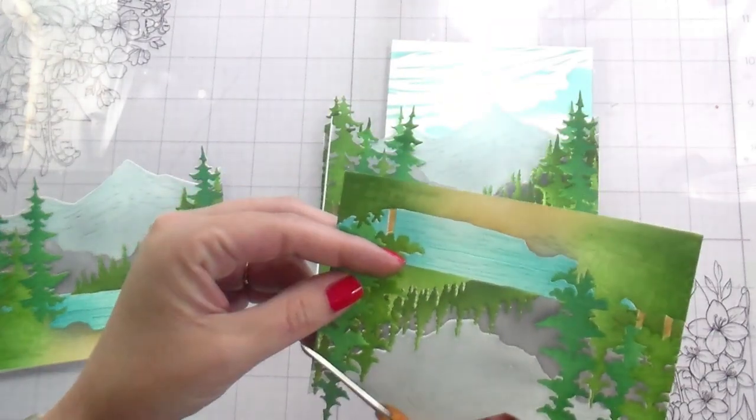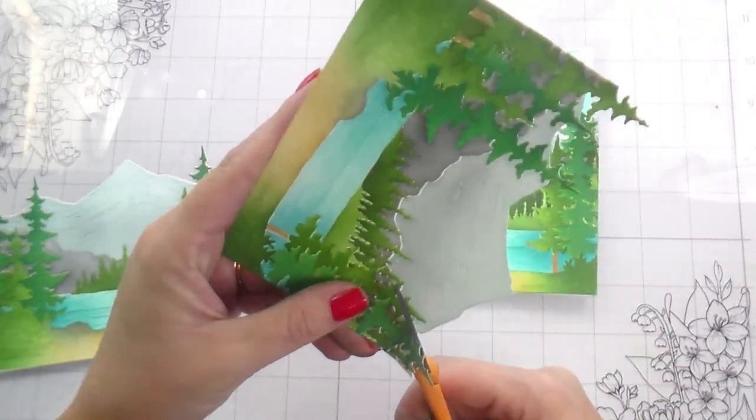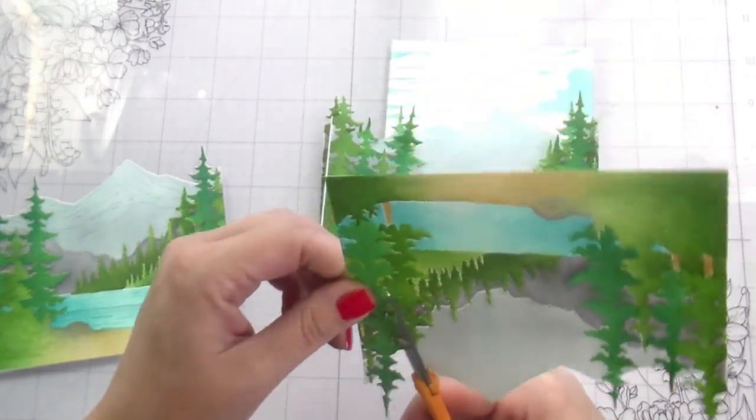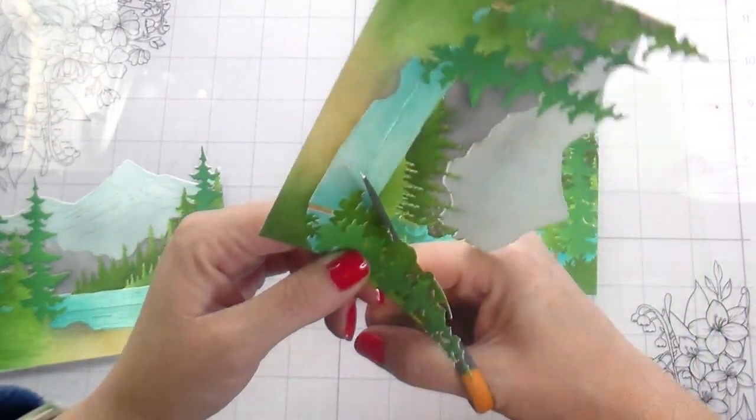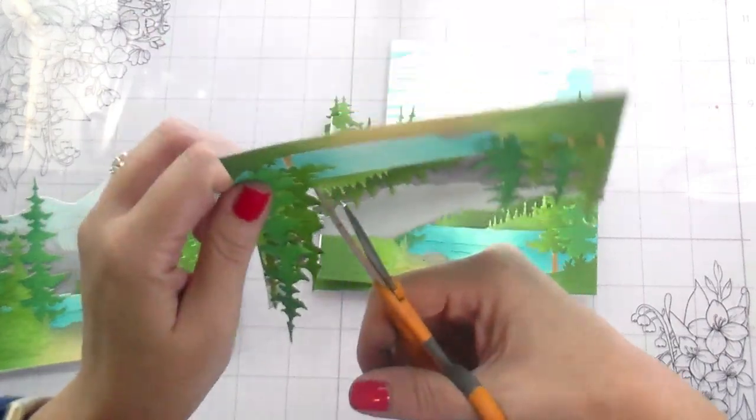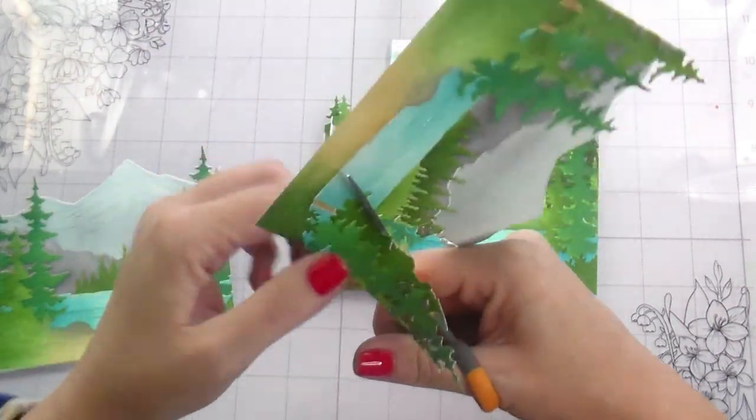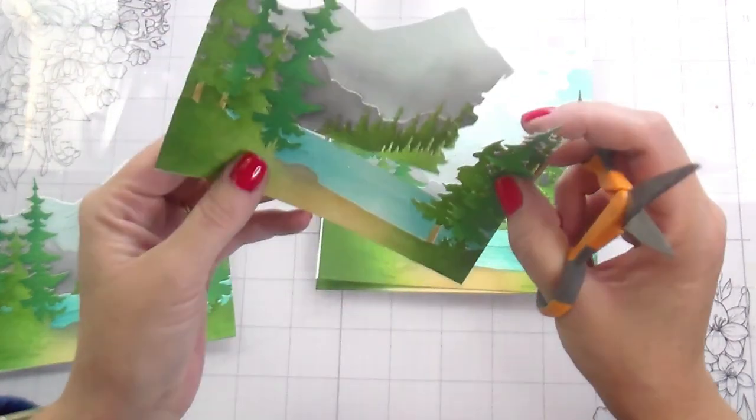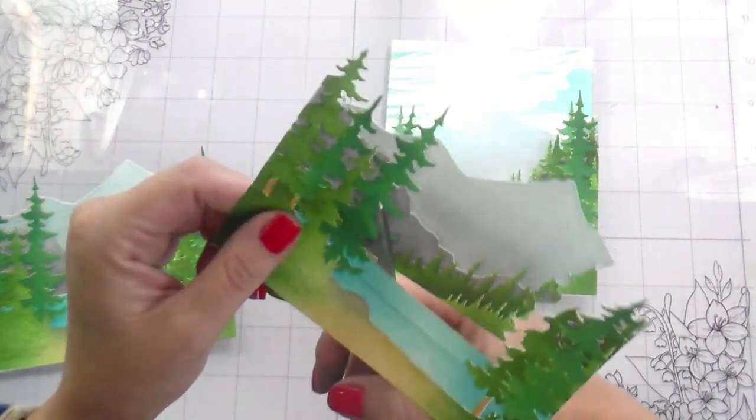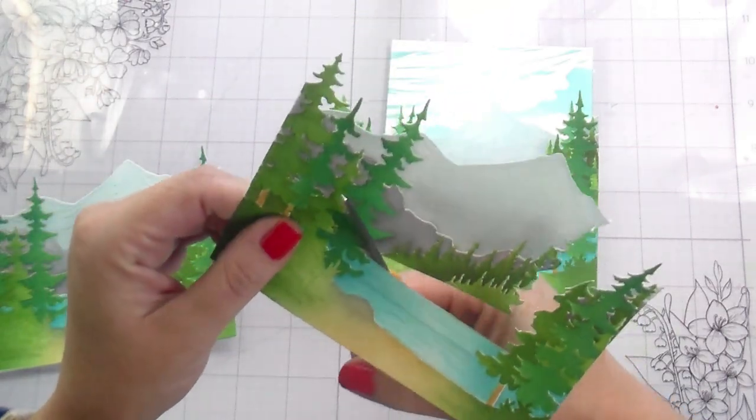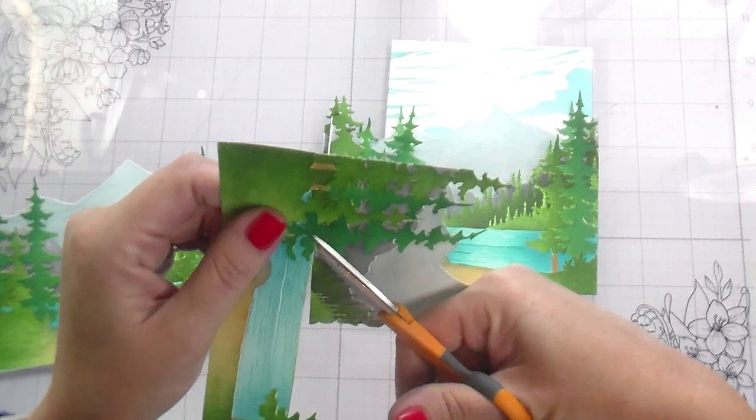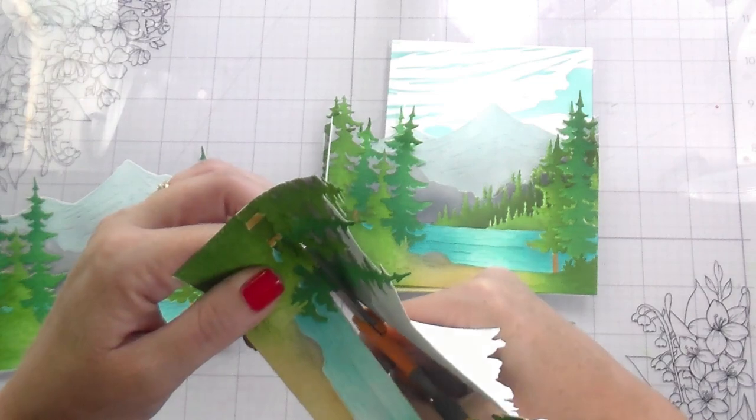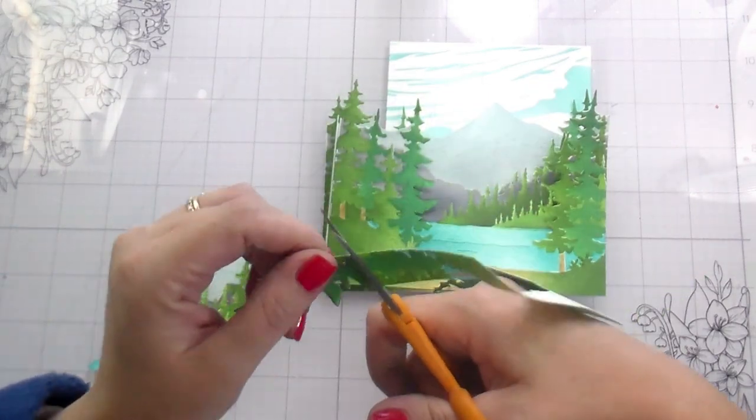So I'm going to trim out all of the mountain and those trees in the back. I'm going to take all of that out. And so I'm going to trim around the right hand, the pines that are closest to us. I'm going to trim around those and then straight across that water line, which is going to be my third tier. So all of that background will be removed. And then each one of these is going to be a different level that pops up.